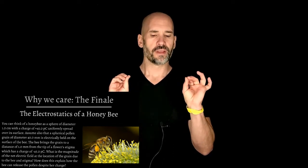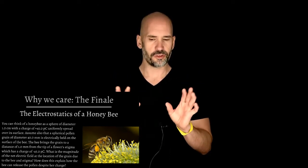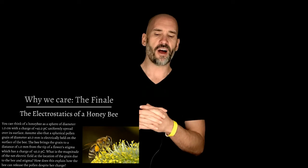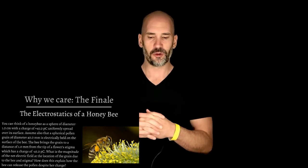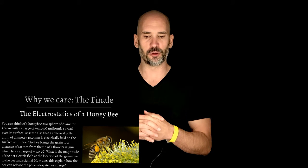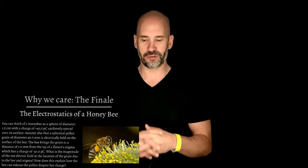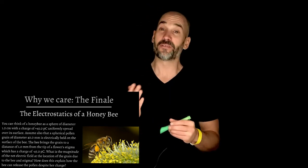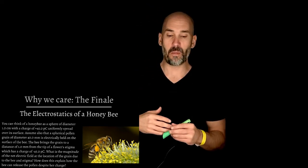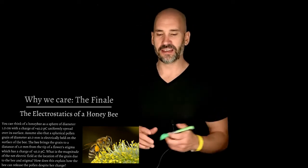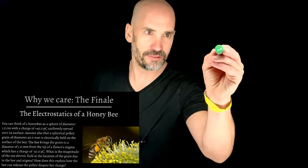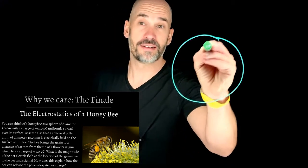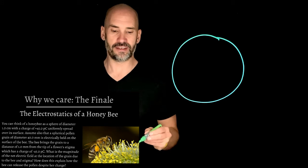So here's the question, I'm going to read this. You can think of a honeybee as a sphere of diameter of one centimeter with a charge of 45 picocoulombs uniformly spread over its surface. I love questions like this. I love physics because you can just make complex things like a bee something as simple as a sphere. And for somebody who draws terribly, this makes life a lot easier for me.